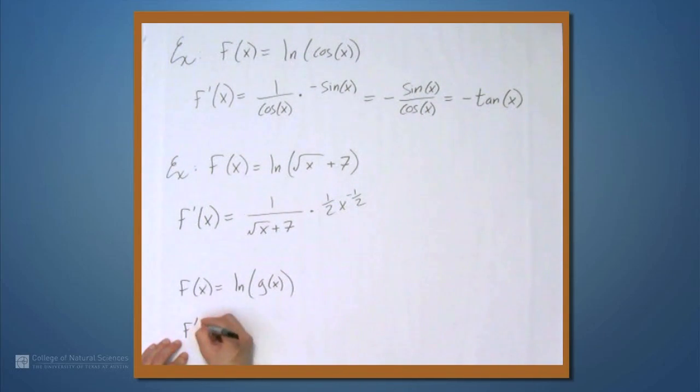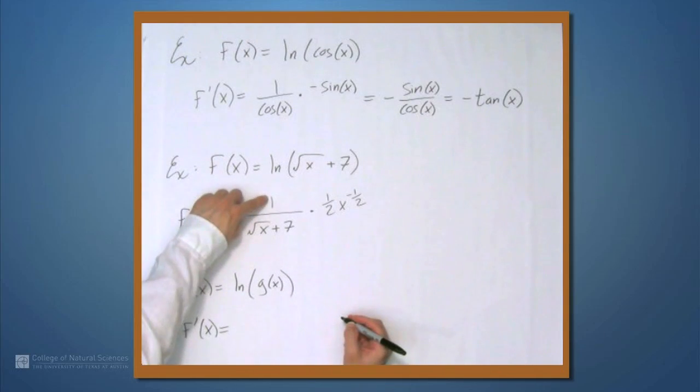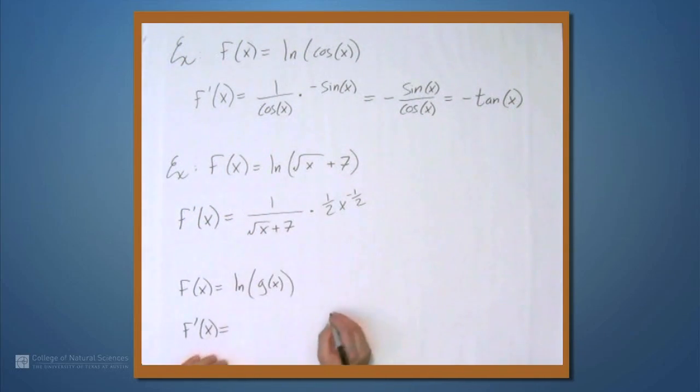And in each of these cases, we saw that f prime is, well, what do we get here? 1 over g times g prime. So this is just g prime over g of x. And yes, it's another formula, but it's something that you'll see often enough that it's worth memorizing.